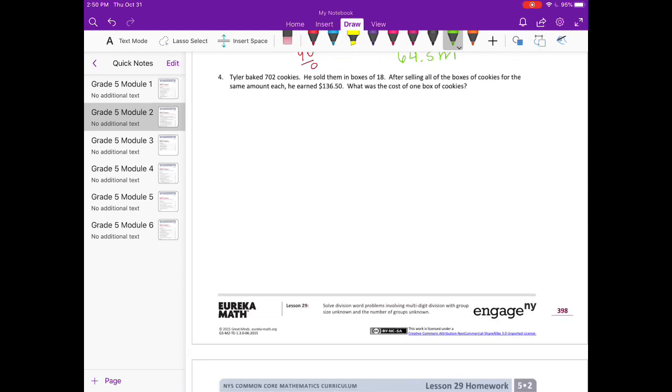Number 4. Tyler baked 702 cookies. He sold them in boxes of 18. After selling all of the boxes of cookies for the same amount each, he earned 136 dollars and 50 cents. What was the cost of one box of cookies? So first of all, we know he baked 702 cookies and sold them in boxes of 18. So let's see how many boxes he sold before we can figure out how much each box was. So 702 divided by 18.